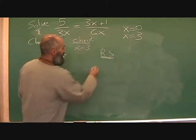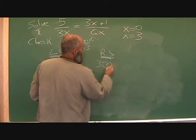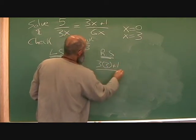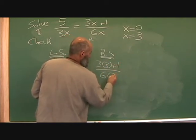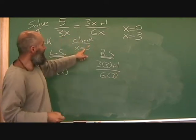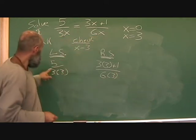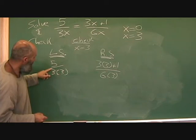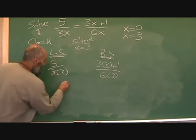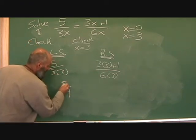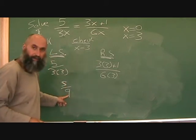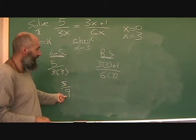On this side, we're going to go three times three plus one over six times three. So wherever you see x, you're plugging in three. Five over three times three, that's just five over nine. Now we can't simplify that anymore. So that's just five over nine on this side.